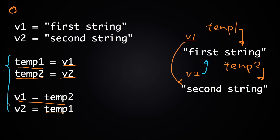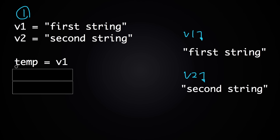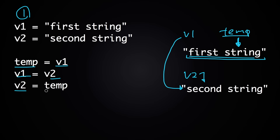Actually, we don't have to use two temporary variables. Here's a solution using just one temporary variable. First, set temp to what v1 refers to — so temp holds 'first string.' Then set v1 = v2, so v1 no longer refers to 'first string' and instead refers to 'second string.' Note that 'first string' is not lost because temp is still pointing to it. Finally, set v2 = temp, so v2 refers to 'first string.' This pattern of using a single temporary variable to swap two variables is very common and important for any programmer.